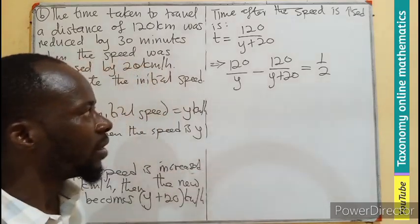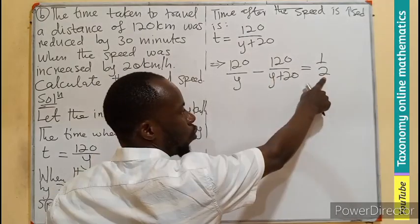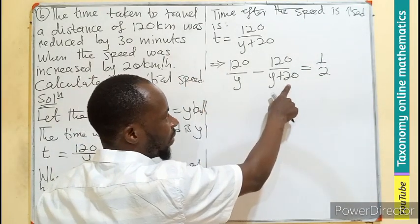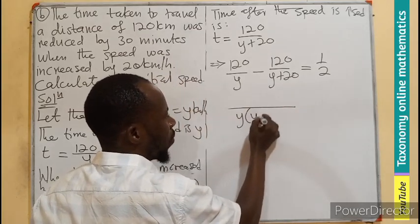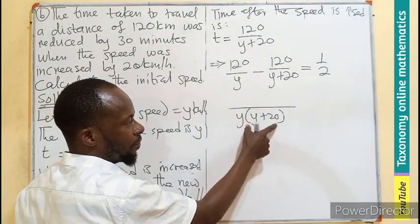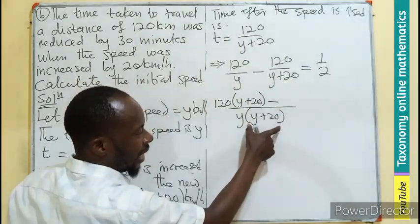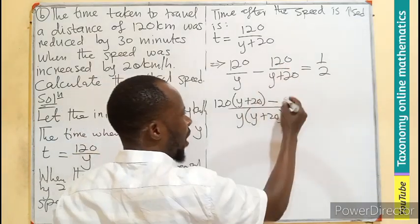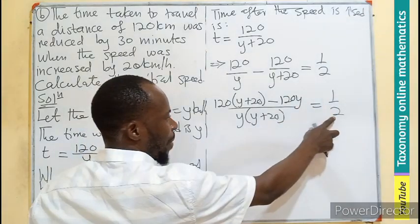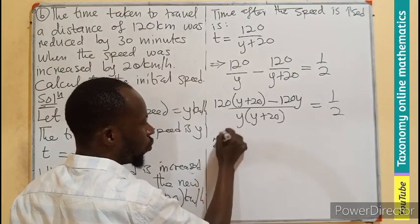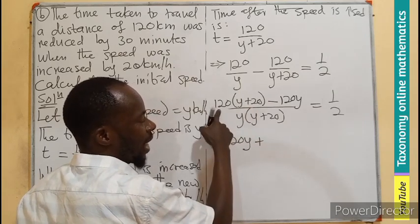Combining with the LCM of Y(Y plus 20): 120 times (Y plus 20) minus 120Y equals 1/2 times Y(Y plus 20). Cross-multiplying by 2: 2 times [120(Y plus 20) minus 120Y] equals Y(Y plus 20). Expanding: 2 times [120Y plus 2400 minus 120Y] equals Y squared plus 20Y. The 120Y terms cancel, leaving 2 times 2400 equals Y squared plus 20Y.